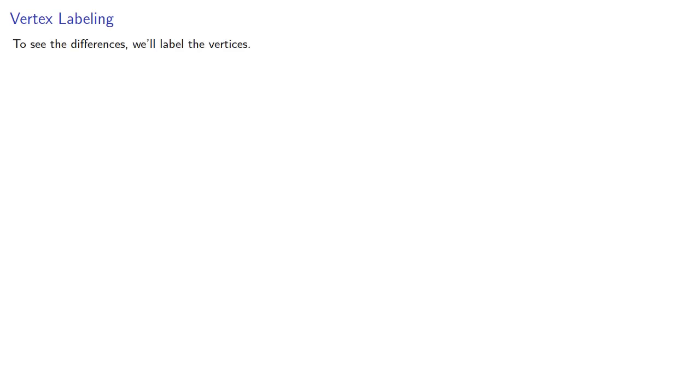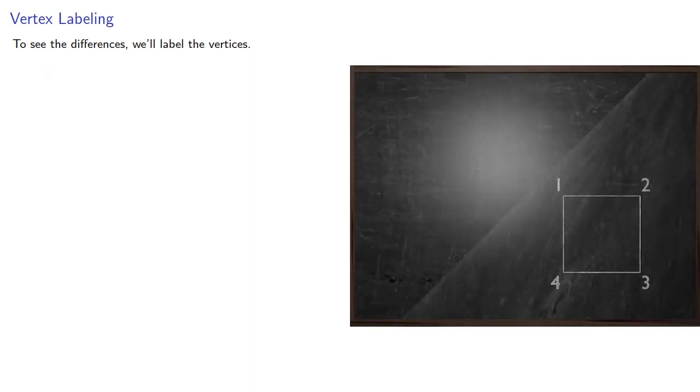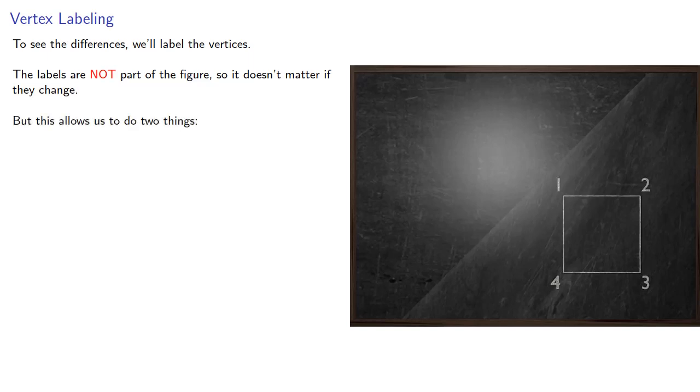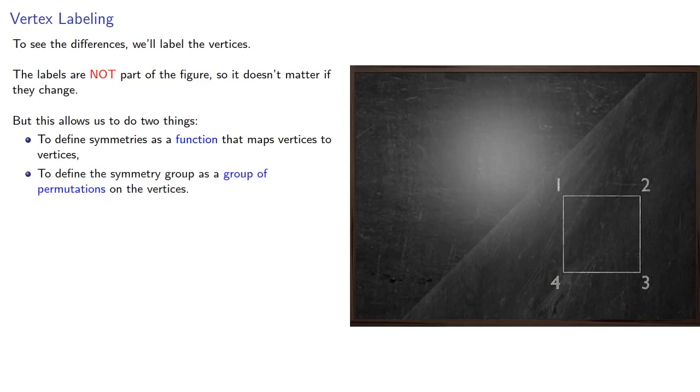So to see the differences, we'll label the vertices. Now the labels are not part of the figure, so it doesn't matter if they change. But this vertex labeling allows us to do two things. We can define symmetries as functions that map vertices to vertices, and to define the symmetry group as a group of permutations on the vertices.